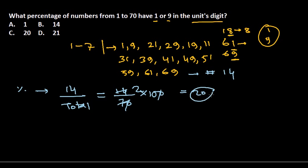So simply, 20% of the numbers from 1 to 70 have 1 or 9 in their unit's digit. The answer is C, which is 20%. It's pretty easy, and I hope that's helpful. Thank you!